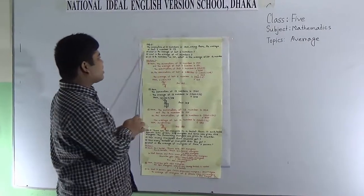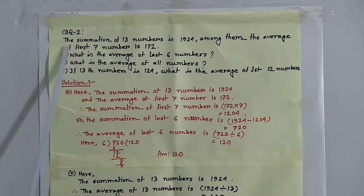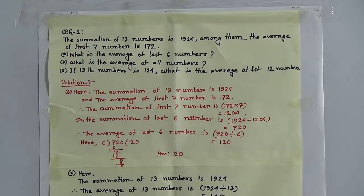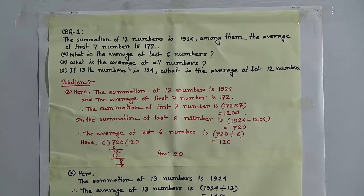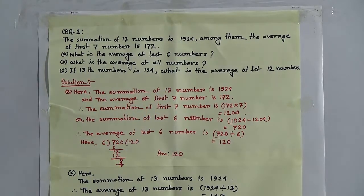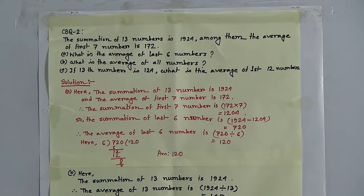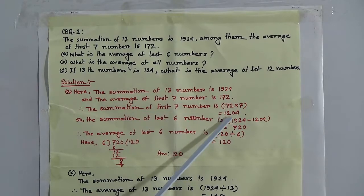CBQ 2: The summation of 13 numbers is 1924. Among them, the average of the first seven numbers is 172. Question A: what is the average of the last six numbers? Given the average of the first seven numbers is 172, we find the summation of the first seven numbers by multiplying 172 by 7, and we get 1204.